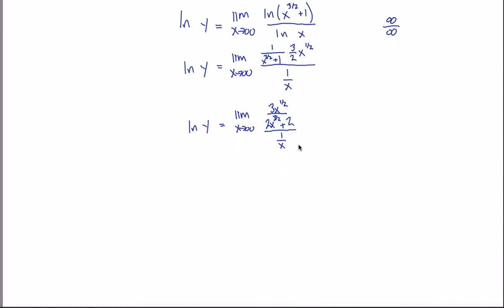That leaves me with a form that's a bit hard to look at, so I'll clean it up in two steps. I take the x to the 1/2 and move it to the top of the fraction, giving 3x to the 1/2. Then I multiply the two fractions straight across: 3x to the 1/2 times 1 gives 3x to the 1/2 on top, and the 2 distributes across (x to the 3/2 plus 1) giving 2x to the 3/2 plus 2 on the bottom, with 1/x remaining. I can then convert the division of fractions into multiplication by the reciprocal, flipping 1/x upside down. Multiplying, 3x to the 1/2 times x gives 3x to the 3/2 power, through adding exponents.